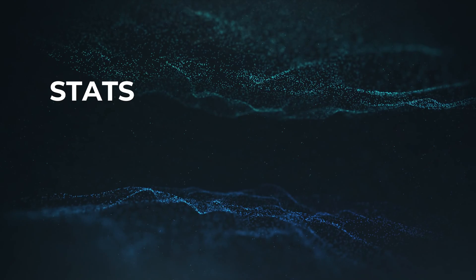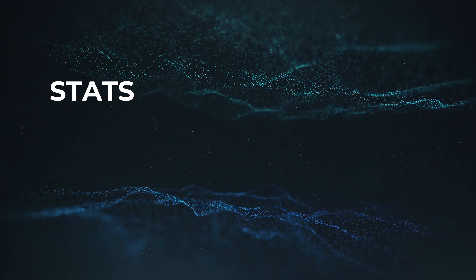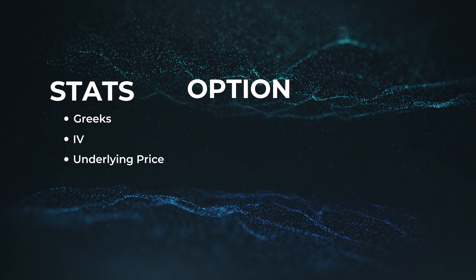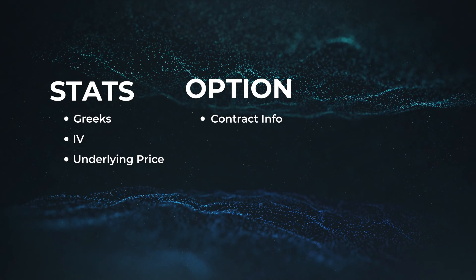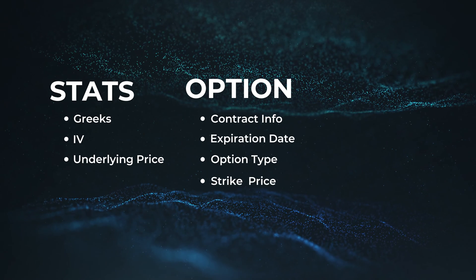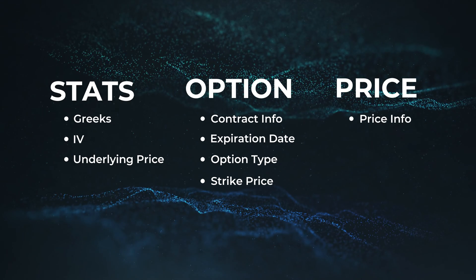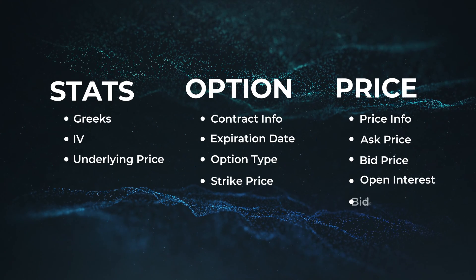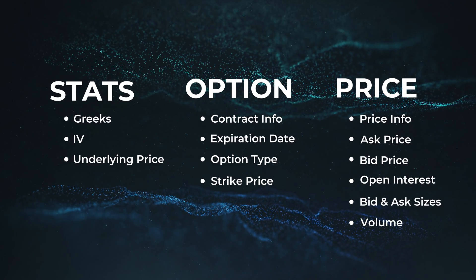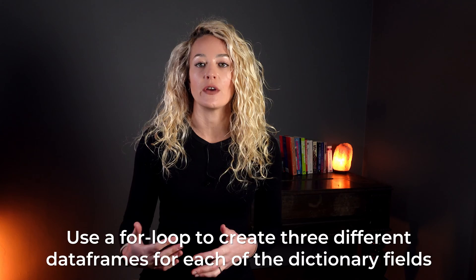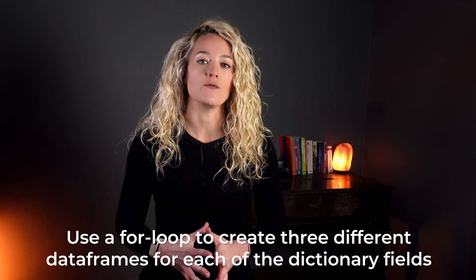Now we can make an API call, and each dictionary in the JSON response is subdivided into three parts. First is stats, which contains the option Greeks figures along with implied volatility and the underlying price of the contract. Next is option, which comprises the basic information about the contract, like the expiration date, option type, and strike price. Last is price, which includes every type of price-related information, like the ask price, bid price, open interest, size of the asks and bids, volume, and so on. After making the API call, we will use a for loop to create three different data frames for each of the dictionary fields to get a better view of the information that we're extracting.